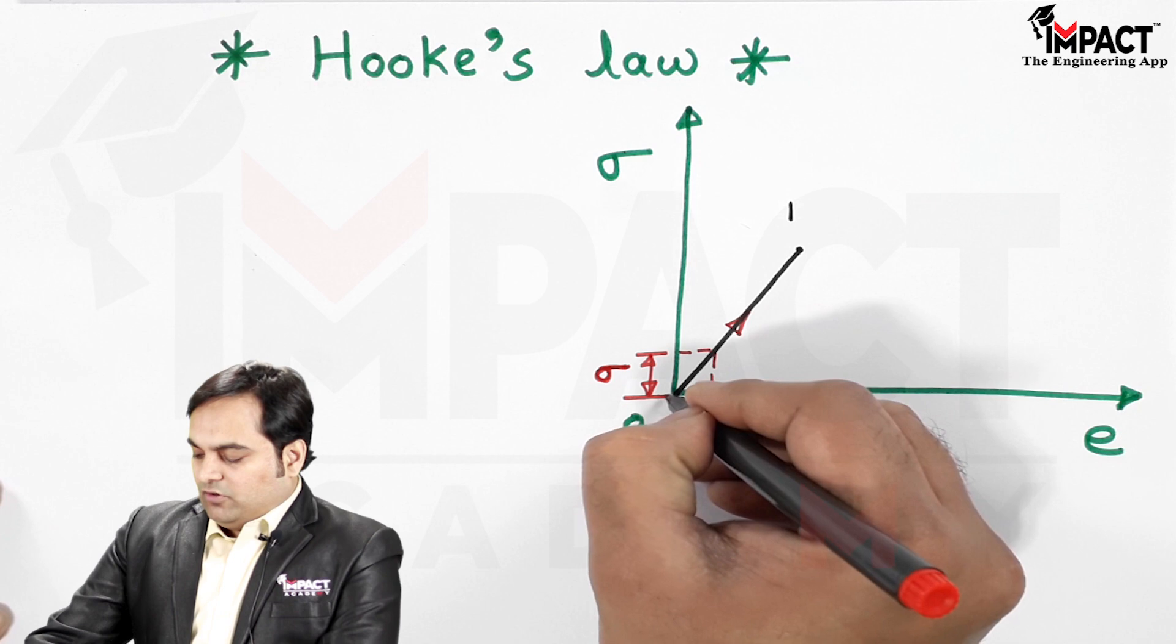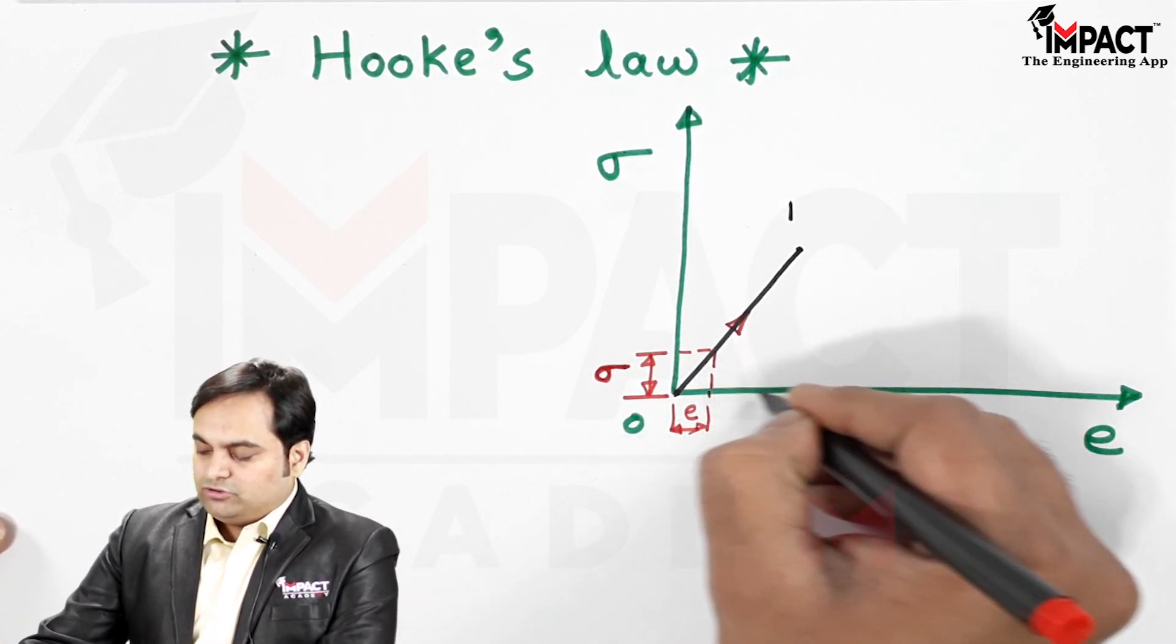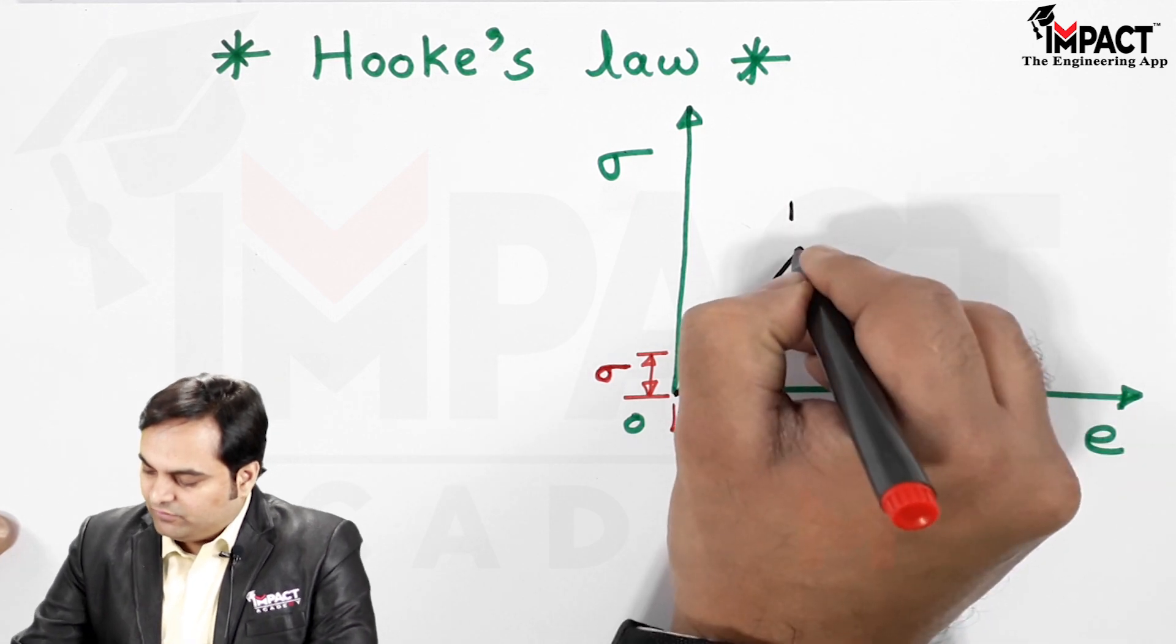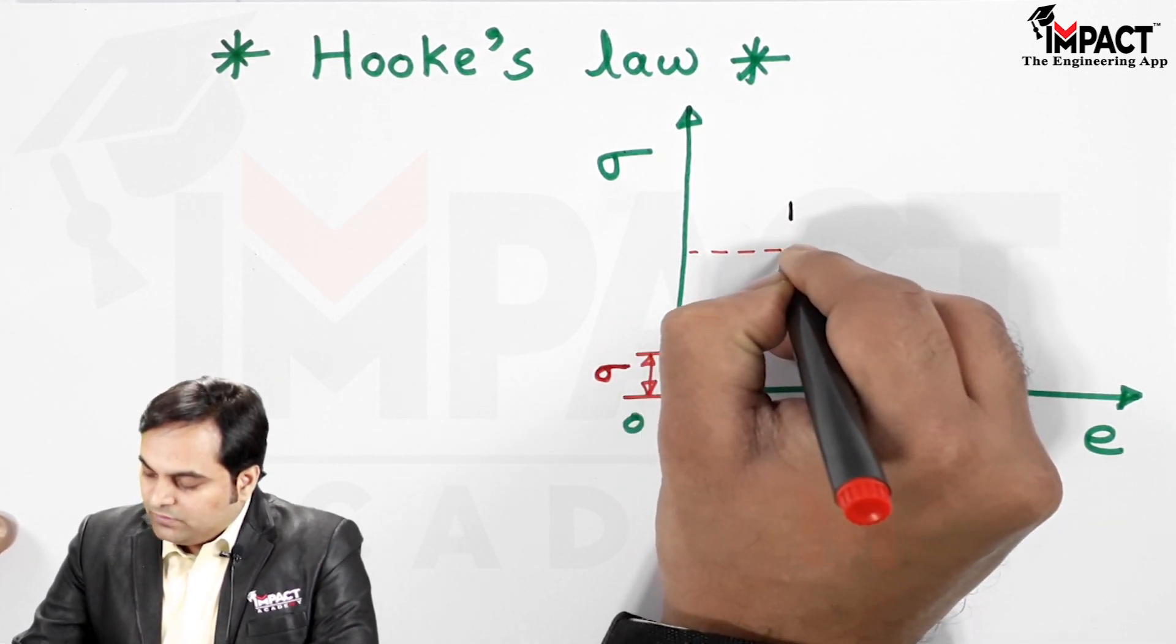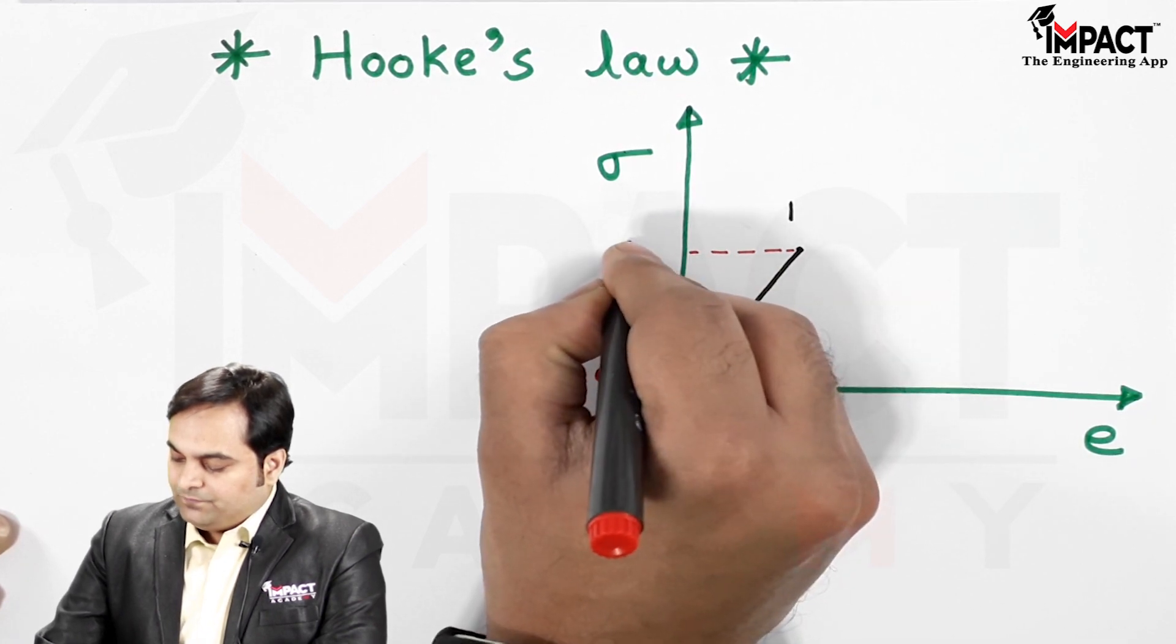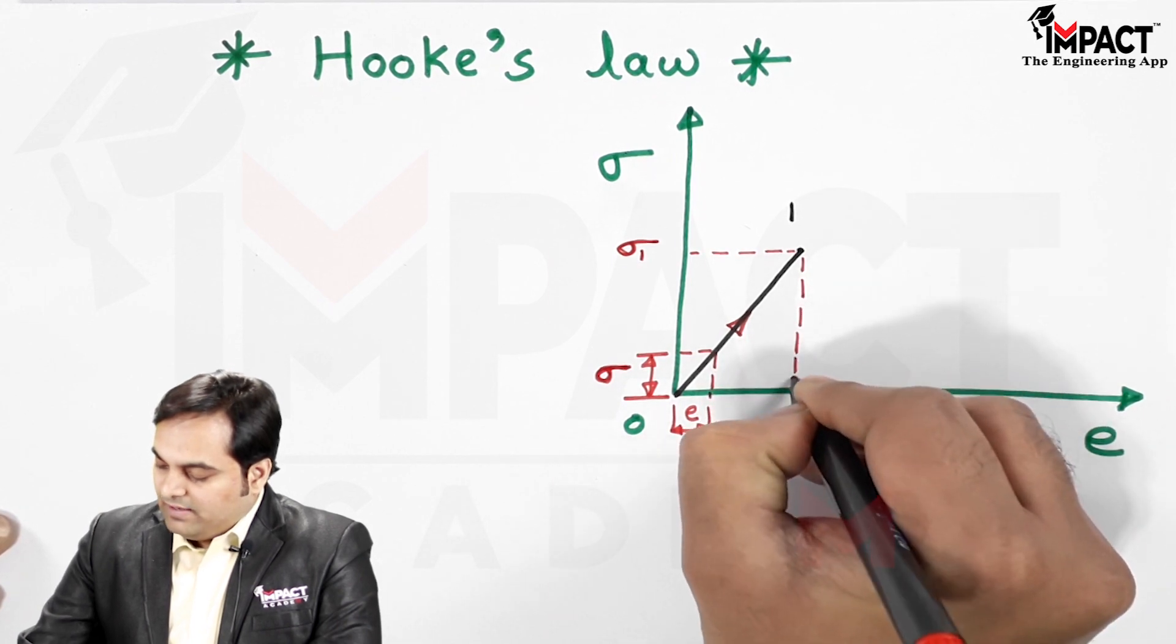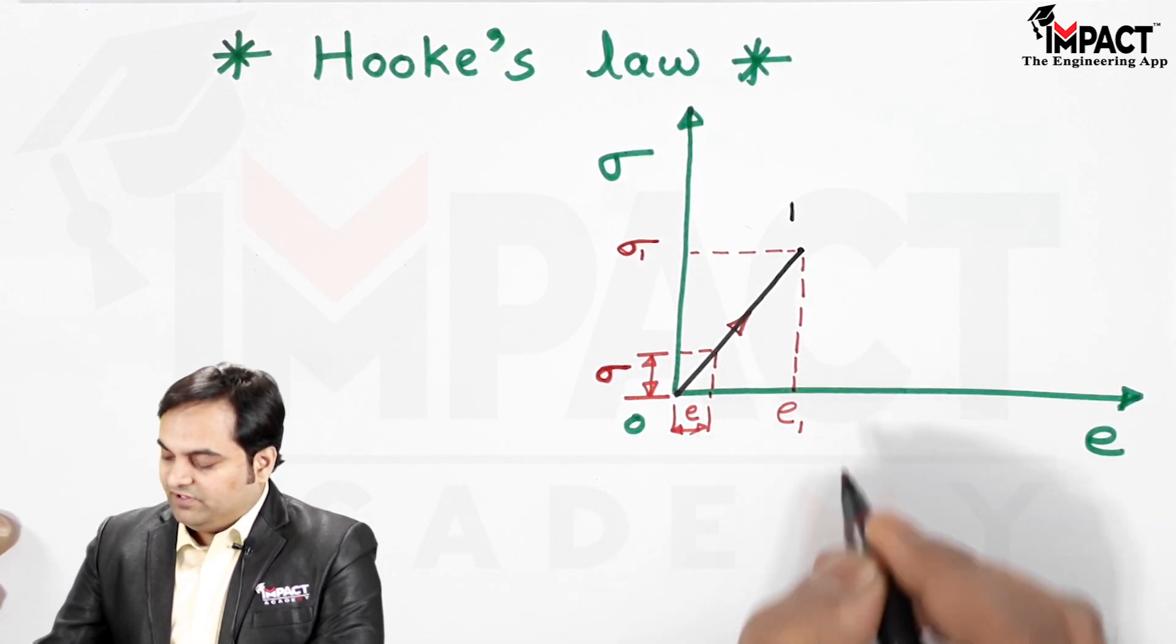Similarly, when I go on increasing the stress here, strain value will also go on increasing, and finally we are going to reach point 1 where the stress will be denoted by σ₁ and the strain will be denoted by e₁.